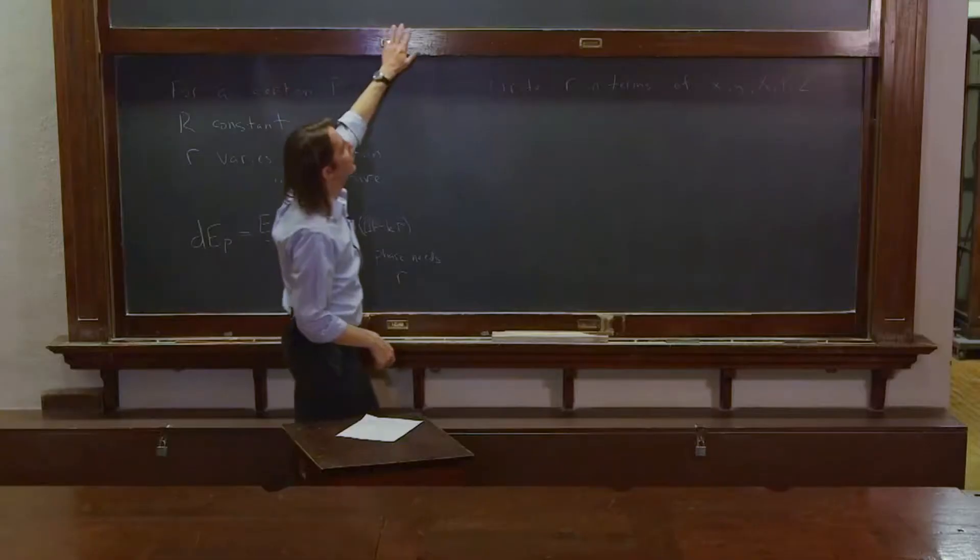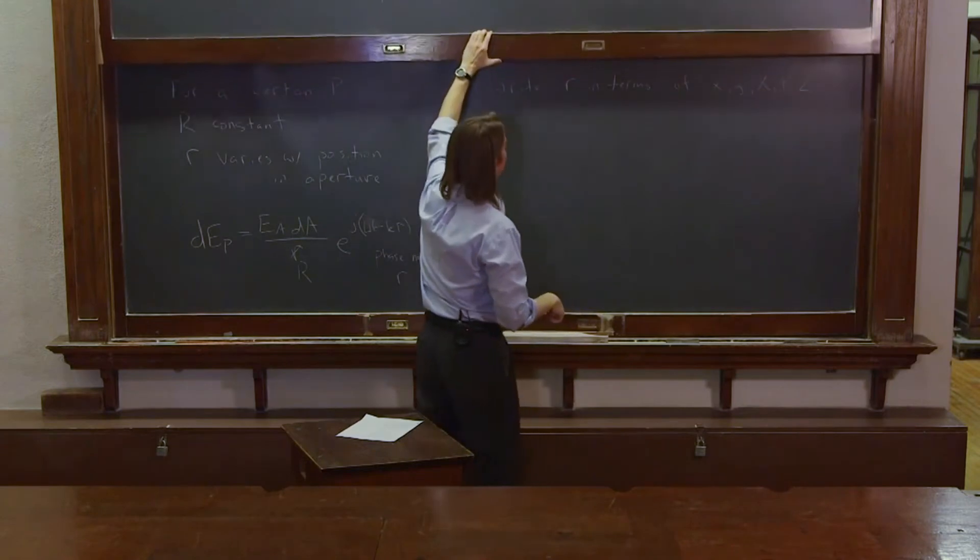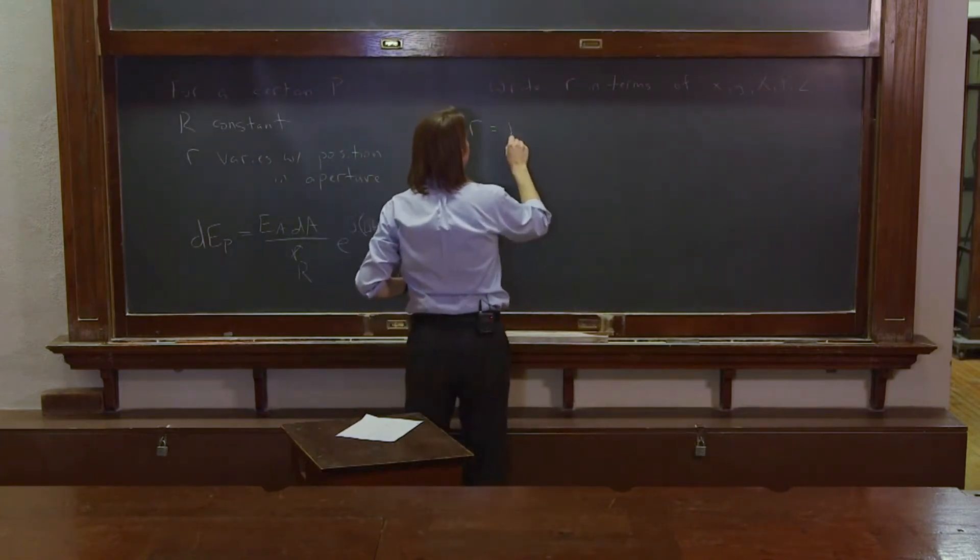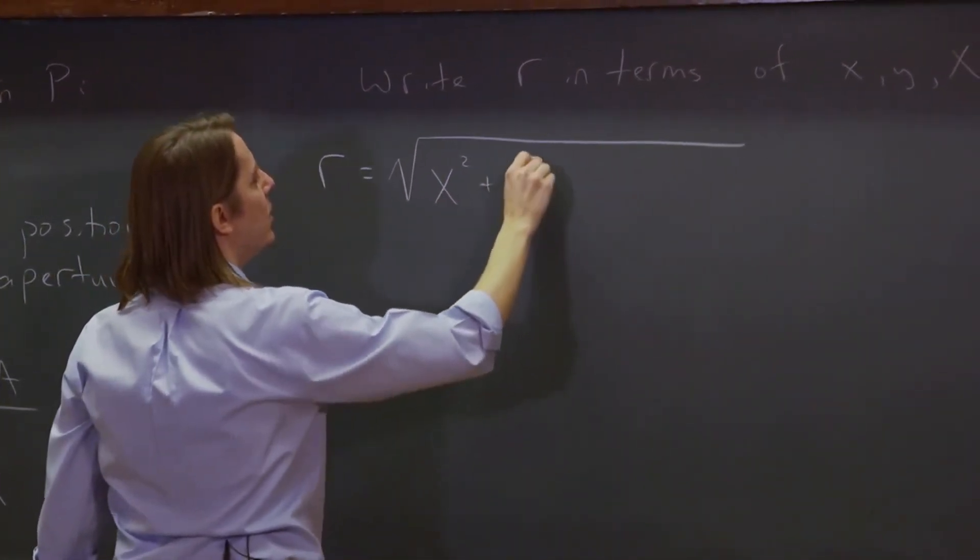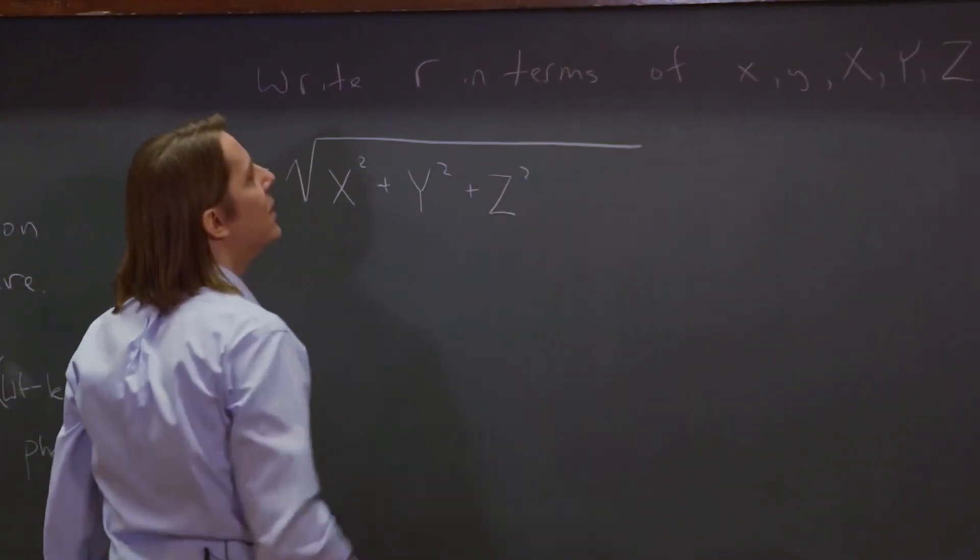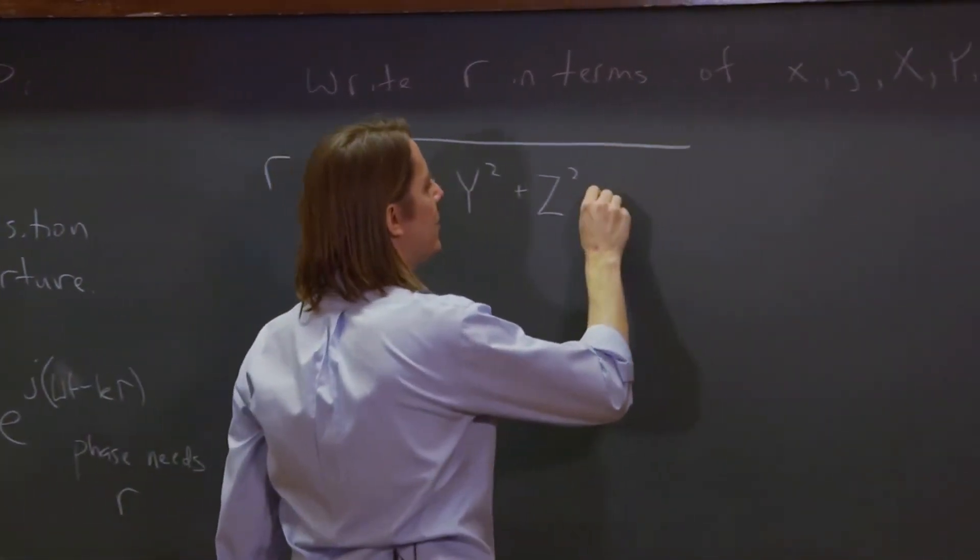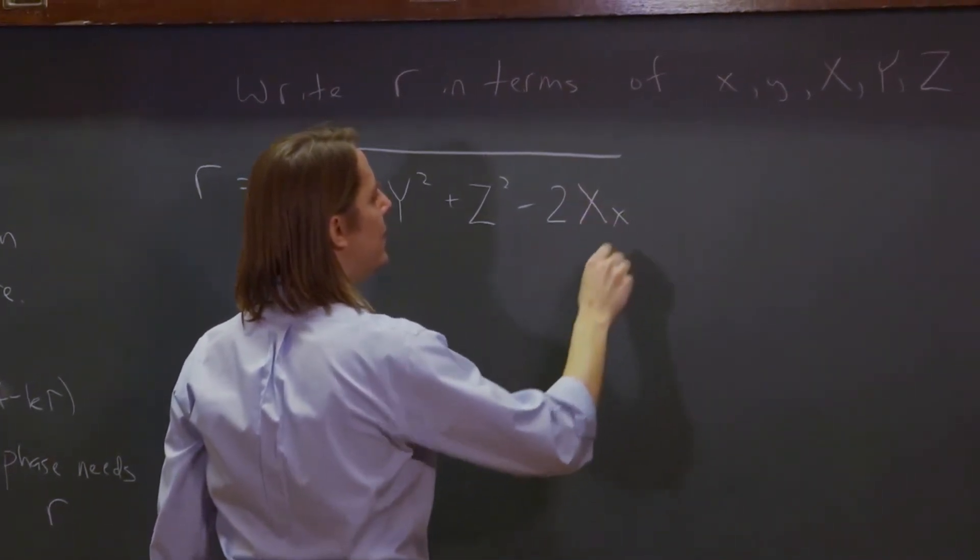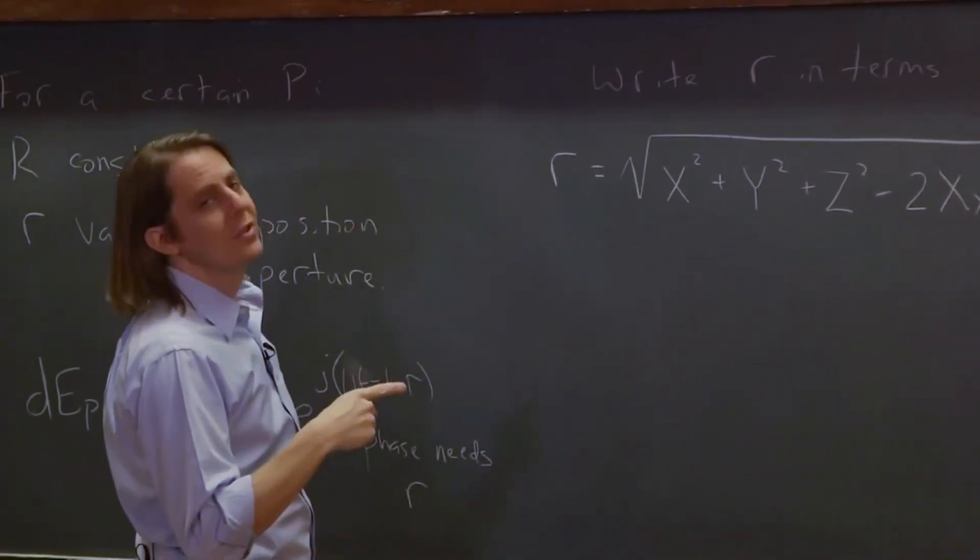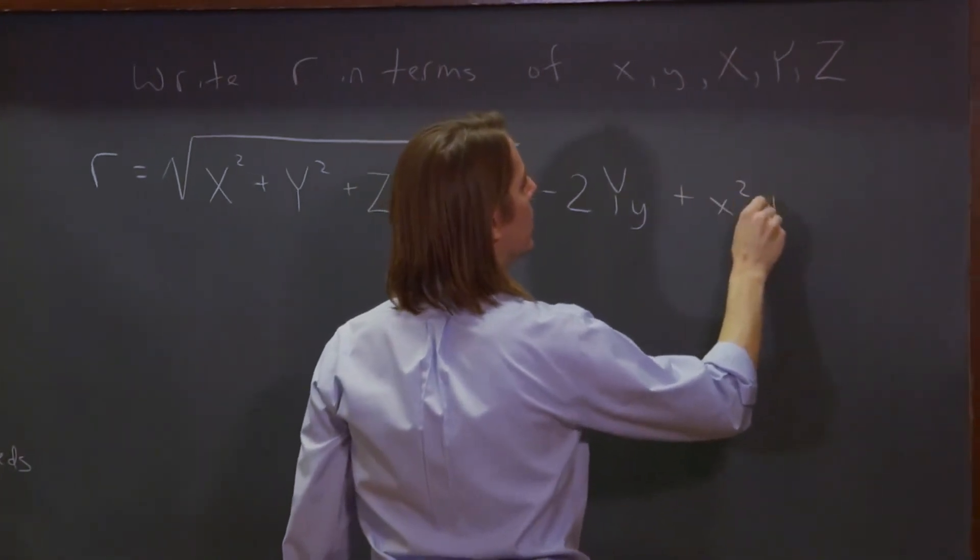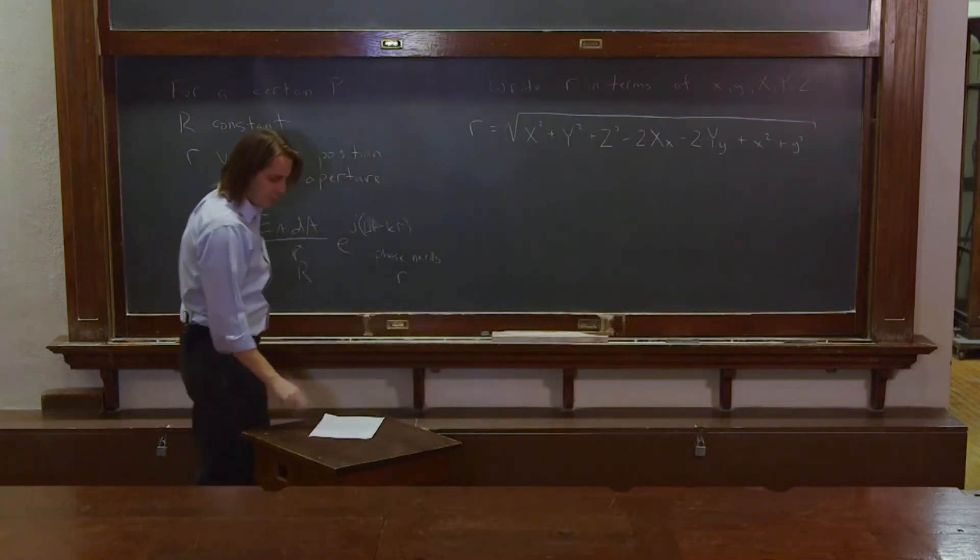So, we sort of did that. Here, we had big x minus little x squared, big y minus little y squared, z squared, so we're just going to go ahead and expand that, and get that little r is the square root of - you'll have the big x squared, and the big y squared, and the big z squared, and then you'll have a couple of the cross terms. So big x minus little x squared then has minus two xx, and minus two yy, and then plus it has a little x squared and a little y squared, plus little y squared, and no little z squared, because little z is always equal to zero.